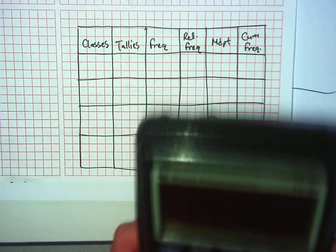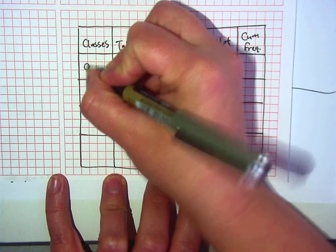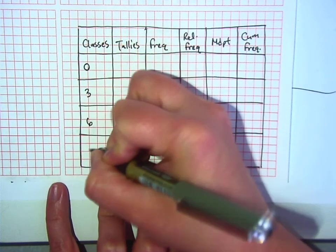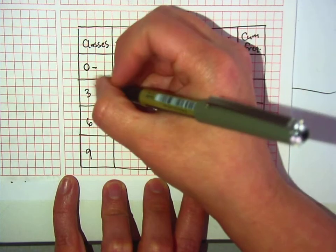So we're going to start here: 0 plus 3 is 3, plus 3 is 6, plus 3 is 9. Did you guys do it the right way? Okay.